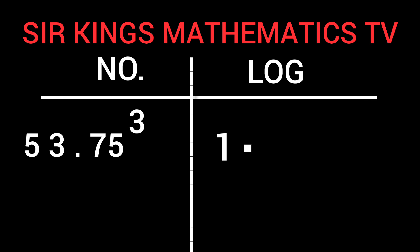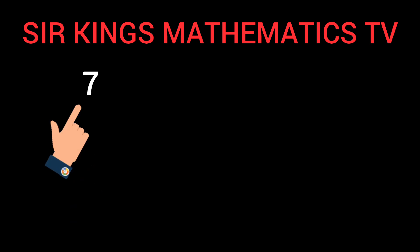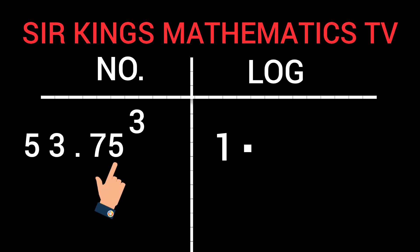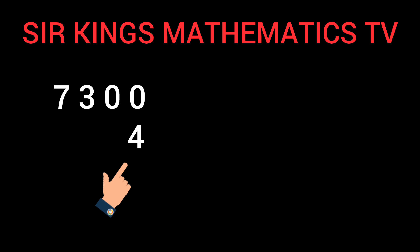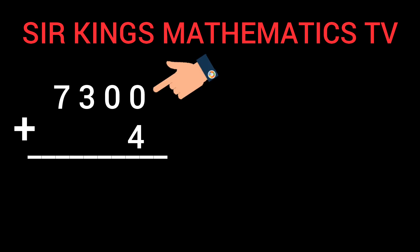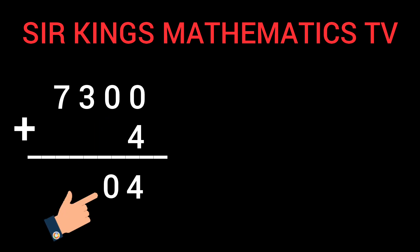Now let us find Mantissa with our four-figure table. 53 under 7 will give us 7, 3, 0, 0. Difference 5 will give us 4. Let us add 0 plus 4, will give us 4. Write it down here. Bring down 0, bring down 3, bring down 7. Now, our Mantissa is 7, 3, 0, 4. Write it down here.